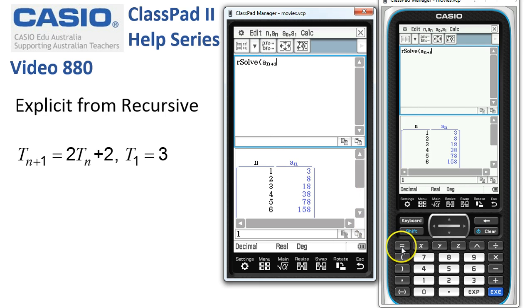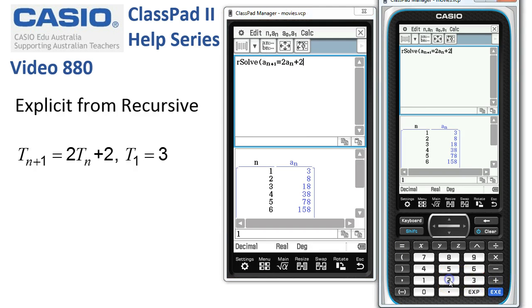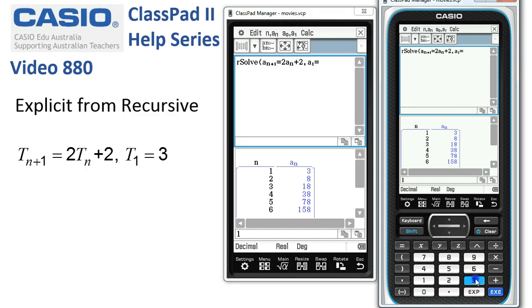The next term is equal to 2 times the previous one plus 2, from the keyboard down here with a first term equal to 3. Now, as soon as I tap execute, ClassPad nicely turns that recursive rule into an explicit rule that we could use to calculate the sequence another way.